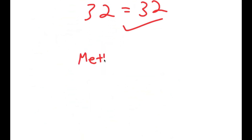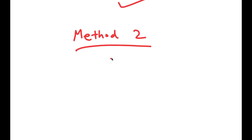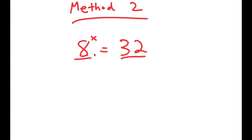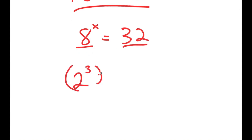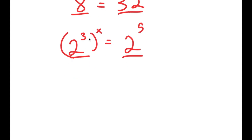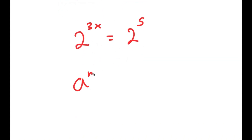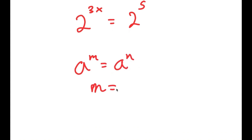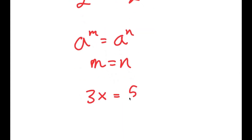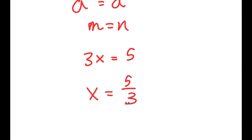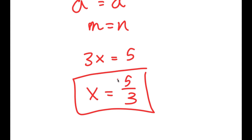I also have a second method of solving this problem. We have the same equation, 8 to the power of x is equal to 32, and this is a simpler method. I'm going to rewrite these two numbers — 8 as 2 to the power of 3, and 32 as 2 to the power of 5 — rewriting both with the same base. So 2 to the power of 3 to the power of x is the same as 2 to the power of 3x, which equals 2 to the power of 5. Because these two have the same base, a to the power of m equals a to the power of n means m equals n. So 3x equals 5, and x equals 5 over 3.